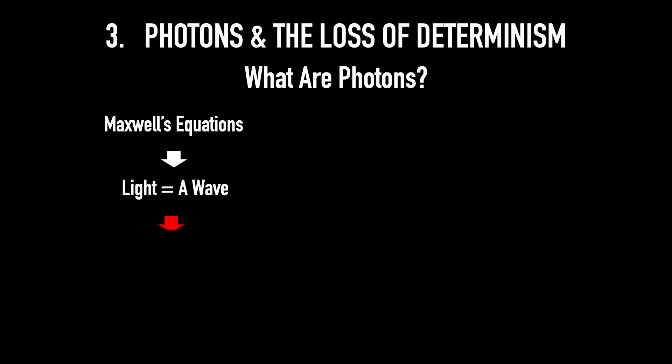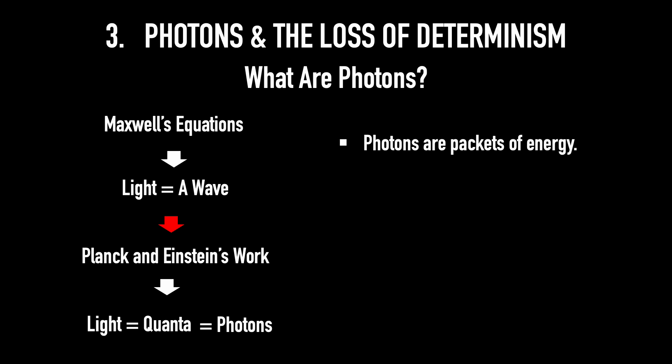Photons and the loss of determinism. What are photons? According to Maxwell's equations, everyone knew that light was a wave. Nevertheless, Planck and Einstein's work on the photoelectric effect showed that light is made of quanta. These quanta of light are called photons. So photons are packets of energy. And a photon is a particle, a quantum mechanical particle.